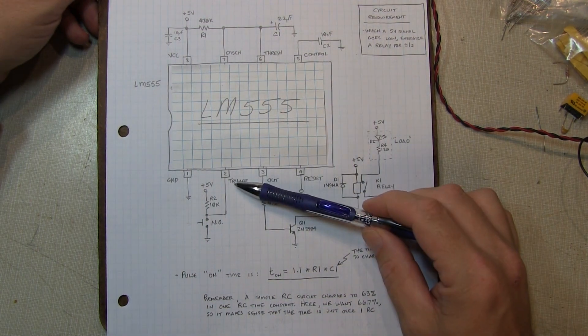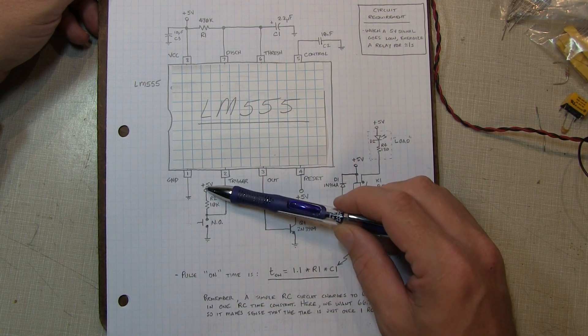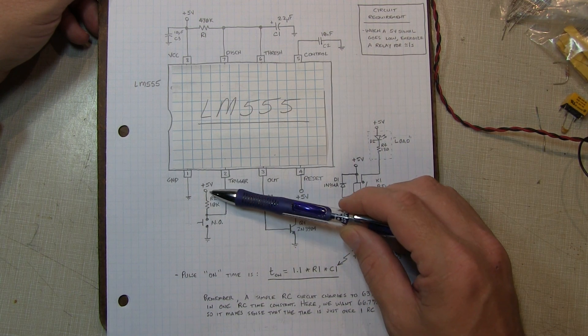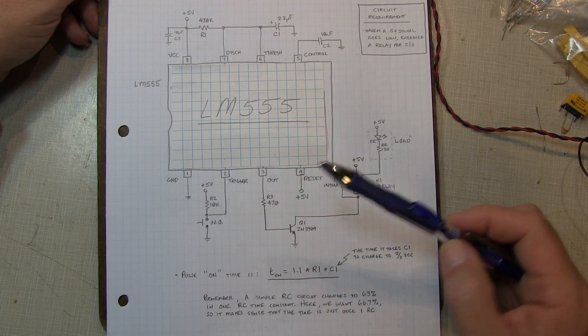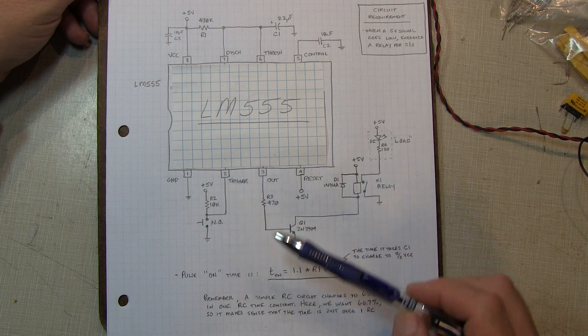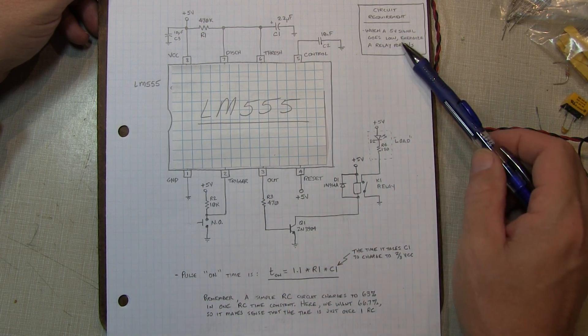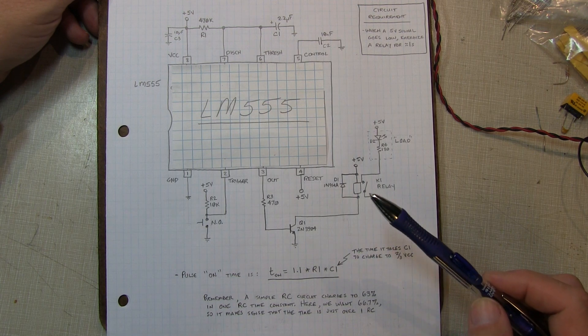Down here on the trigger pin, this is how I'm simulating the loss of his 5-volt signal. I'm simply tying that pin to a 5-volt source through a 10K resistor, and then momentarily shorting it to ground to simulate the loss of that signal.